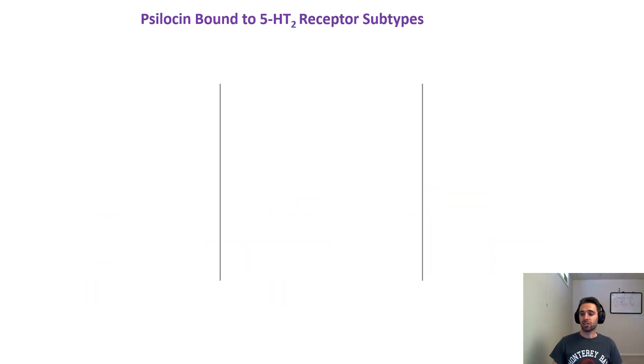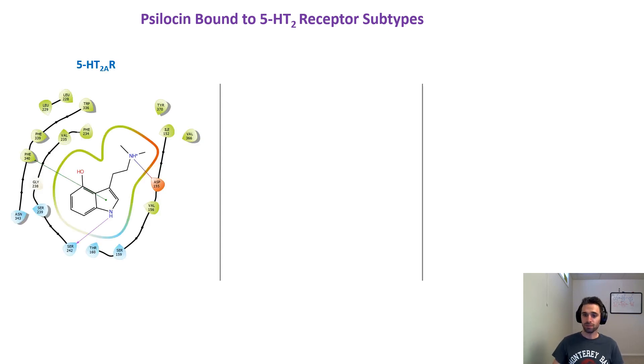Now let's look at what psilocin actually looks like when it's bound to three subtypes of serotonin receptors: the serotonin 2A, 2B, and 2C receptor. Here is psilocin in the middle bound to the serotonin 2A receptor, and we have these interacting amino acid residues shown in the photo with more important interactions in green, purple, and black.